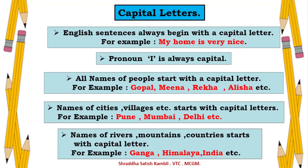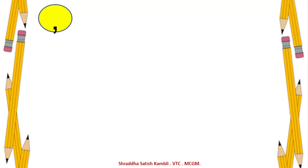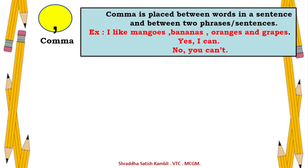All proper nouns begin with a capital letter. This is not strictly a punctuation mark, but it is an important concept to understand alongside punctuation. Now let's move on to punctuation marks. The first one is the comma — C-O-M-M-A. A comma is placed between words in a sentence and between two phrases or sometimes sentences.